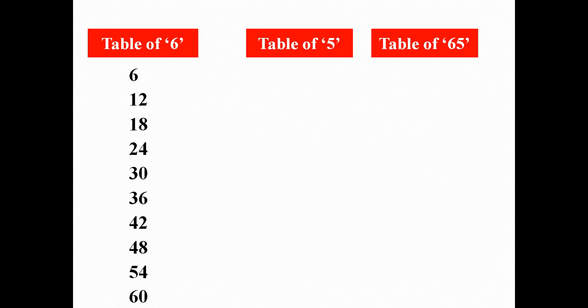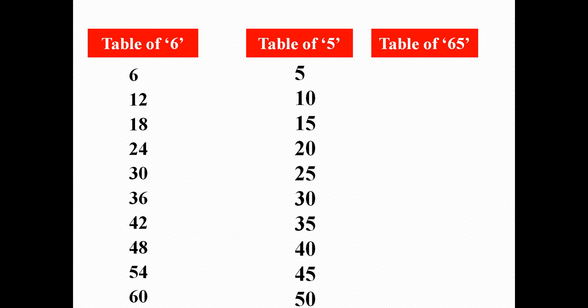Firstly, write the table of 6 here and then write the table of 5. Now observe the table of 5. If there is a single digit number, then we will write both digits as it is. Here are single digits, write both digits as it is — that is 65.